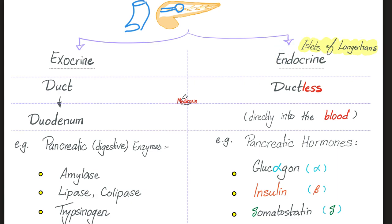When the endocrine glands of the pancreas, which are ductless, secrete their secretions, they dump them into the bloodstream. The exocrine glands of the pancreas secrete the pancreatic digestive enzymes, whereas the islets of Langerhans, which are endocrine, secrete pancreatic hormones — not enzymes. The exocrine enzymes include amylase, lipase, colipase, trypsinogen, and more, which I've discussed in detail in my physiology playlist.